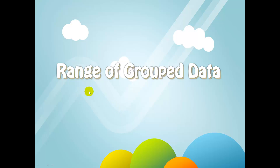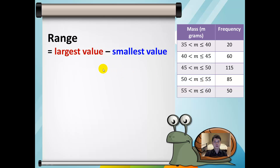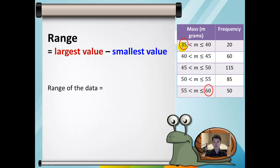Let us look at how to find the range of grouped data. The range is again defined by the largest value minus the smallest value. The largest value is 60 and the smallest value is 35, so the range is equal to 60 minus 35, which is equal to 25.